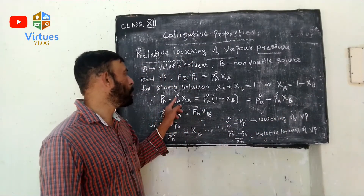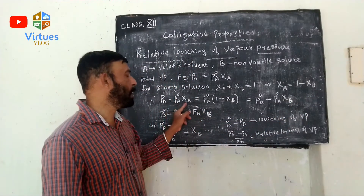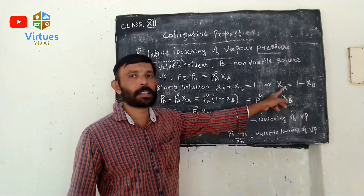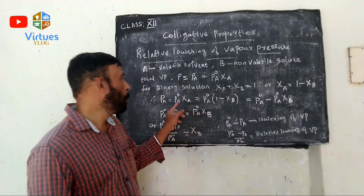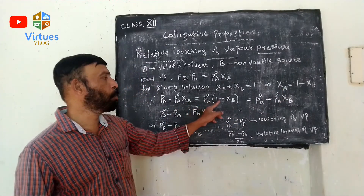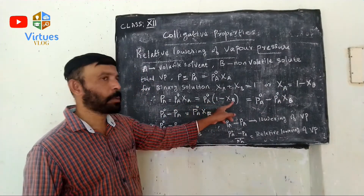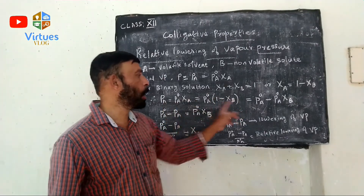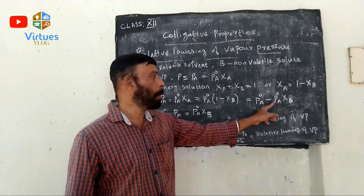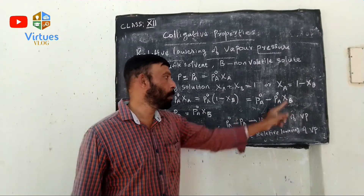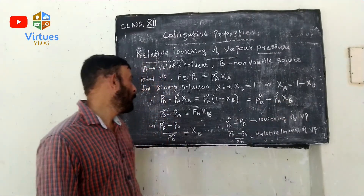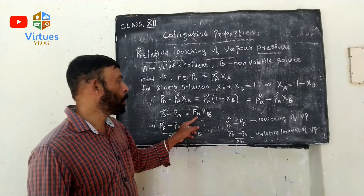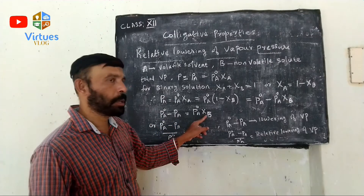Then PA equals P0A into chi A. Substituting chi A as 1 minus chi B, we get PA equals P0A into (1 minus chi B). Multiplying out, we get PA equals P0A minus P0A chi B. Rearranging, P0A minus PA equals P0A chi B.